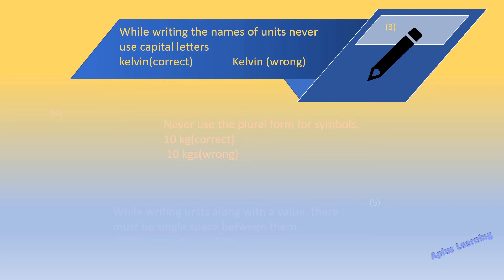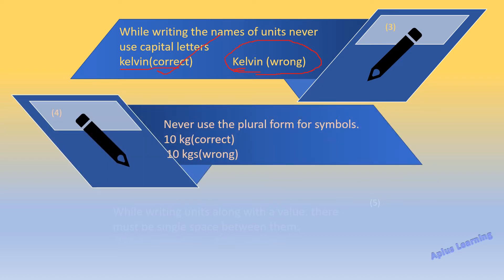Now the next rule: while writing the names of units, never use capital letters. For example, kelvin — observe both ways it can be written. The first form has 'k' as a small letter, and the second form has 'K' as a capital letter. The rule states never use capital letters when writing unit names, so the second form is incorrect. The correct form is 'kelvin' with a small letter at the start.